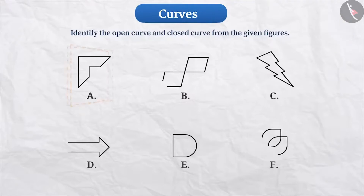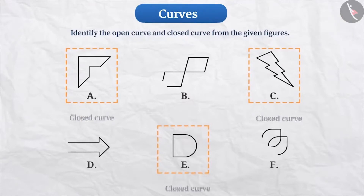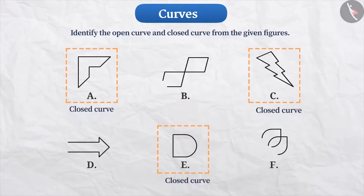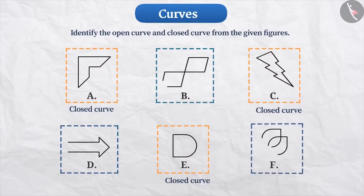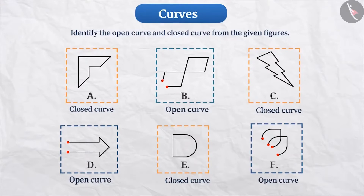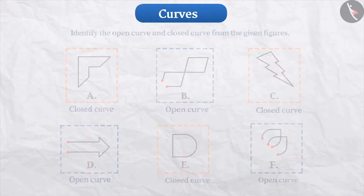Curves A, C, and E are closed curves, as the ends of these curves are joined. However, if we see figures B, D, and F, their ends don't meet. Therefore, all of these curves are open curves.